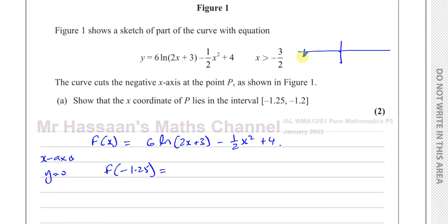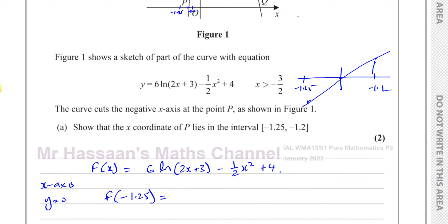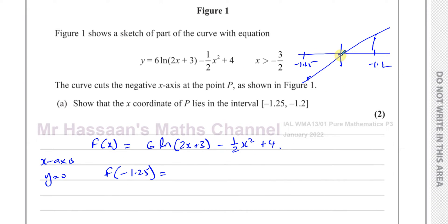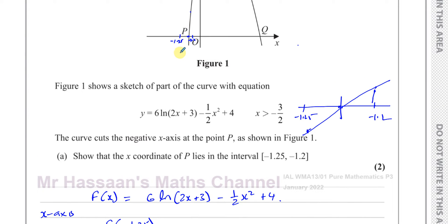Supposing this is the root, and this is minus 1.25, and this is minus 1.2 — if that's the root, then when you put minus 1.25 into this function, you should get a negative value, and when you put minus 1.2 into the function, you should get a positive value, because before the root the curve is below the x-axis, and after the root it's above it.